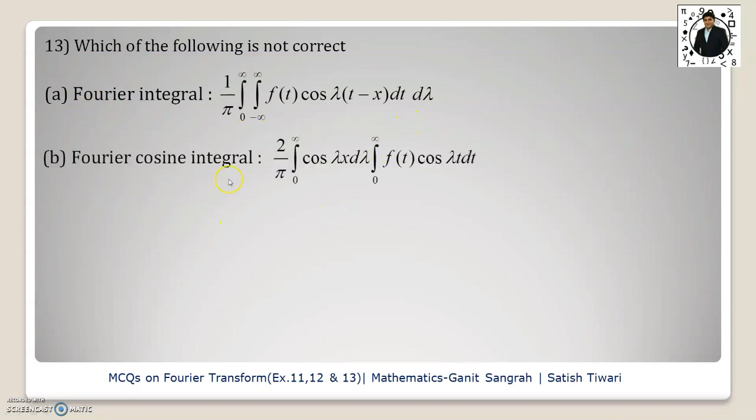Then option b, Fourier cosine integral. It is also correct formula for the Fourier cosine integral. Then Fourier sine integral. This is again a correct formula because we are having the d lambda and dt.